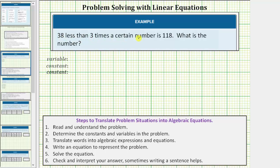Thirty-eight less than three times a certain number is 118. What is the number? Let's use the steps below to help us translate this problem into an algebraic equation.